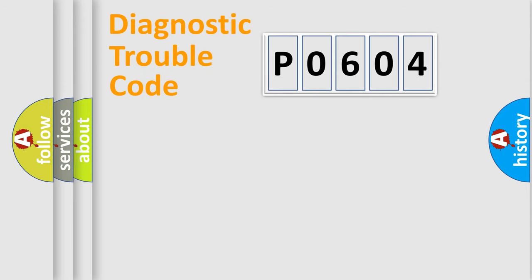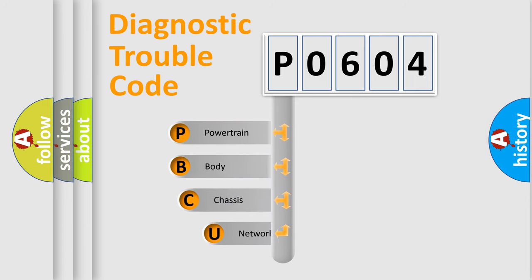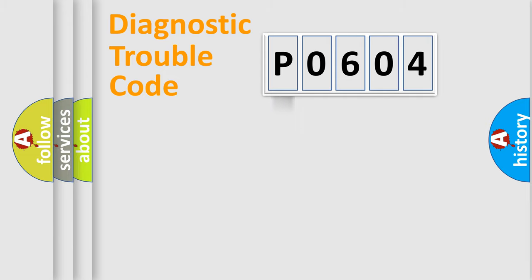Let's do this. First, let's look at the history of diagnostic fault code composition according to the OBD2 protocol, which is unified for all automakers since 2000. We divide the electric system of an automobile into four basic units: Powertrain, Body, Chassis, and Network.